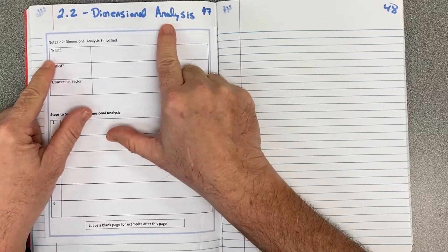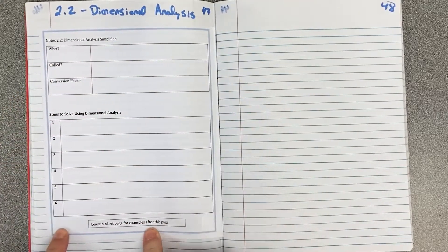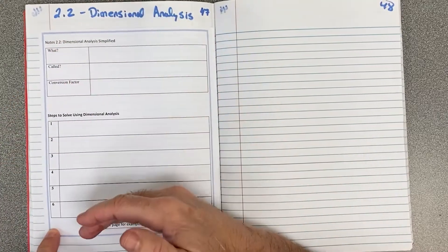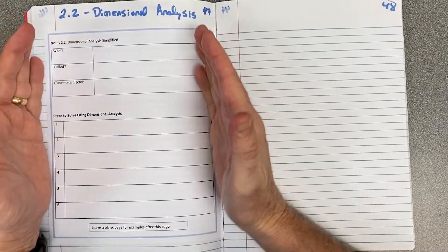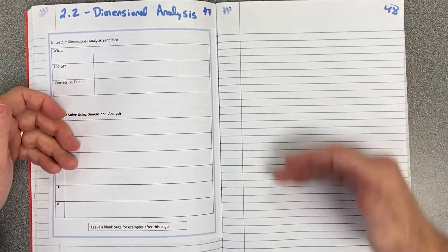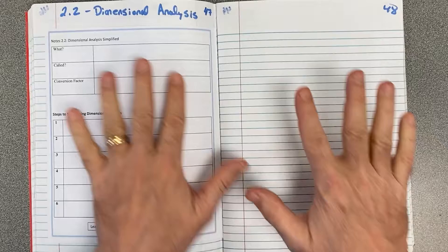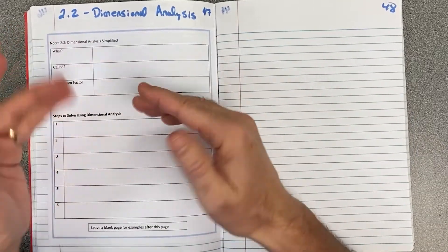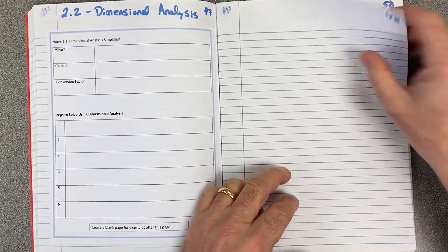Page 47 starts the dimensional analysis, section 2.2. This is the outline for the notes. You're going to put this in here and fill this out. And then it says leave blank for example. So it's two pages of notes, but I've given you an outline of what you're going to do. So write right on this page right here.